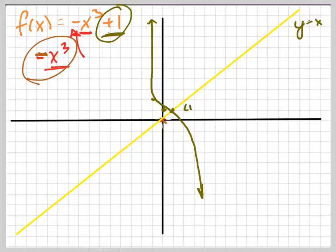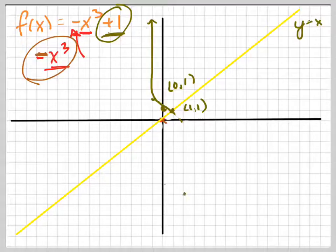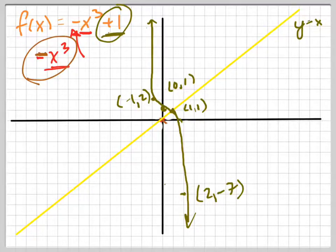This point 1, 1 is going to still be there, right? Let's just name a couple points. 0, 1 is on the graph. 2 is going to be down quite a bit further. Point 2 is going to be negative 7. 2, negative 7, that point is going to be on the graph. Negative 1, 2 is going to be on the graph. So those are all points that are on my graph of f of x.